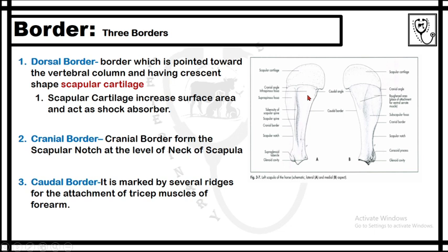This is the scapula of the horse. There are two surfaces: the lateral surface and the medial surface. There are three angles: the cranial angle facing toward the head, the caudal angle facing toward the tail, and the ventral angle facing toward the belly or body. There are three borders: the cranial border facing toward the head, the caudal border facing toward the tail, and the dorsal border facing toward the vertebral column.